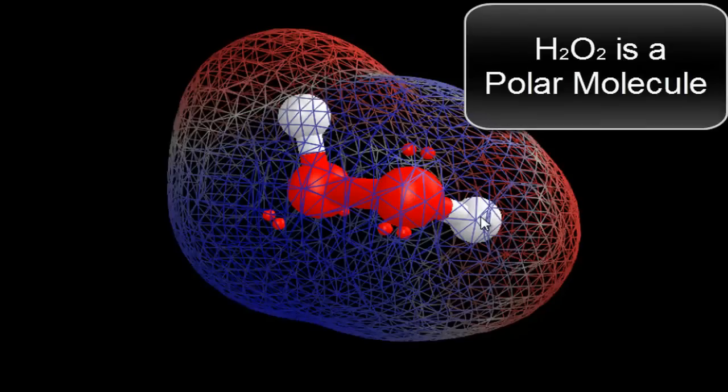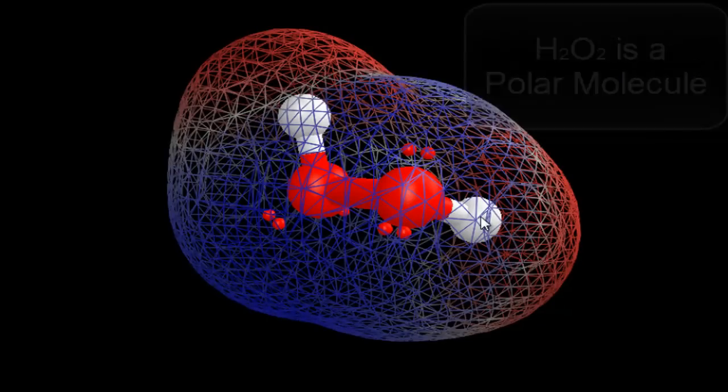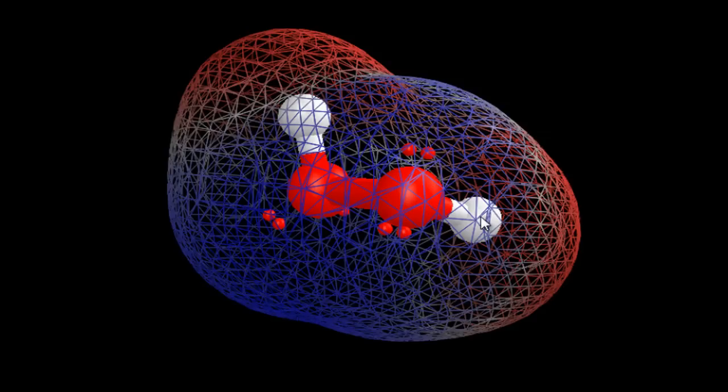So H2O2 is a polar molecule, and that's not surprising. When you buy hydrogen peroxide in the store, it's mixed with water. Water is a polar molecule. Two polar liquids will mix together. So H2O2, polar molecule. This is Dr. B. Thanks for watching.